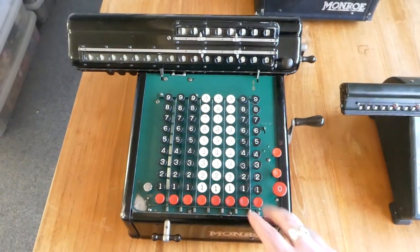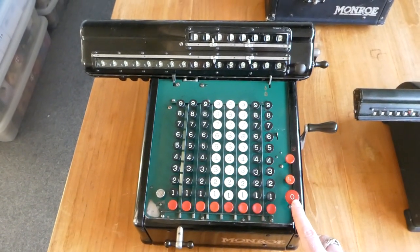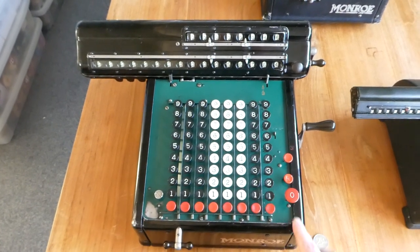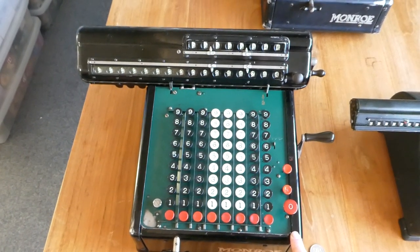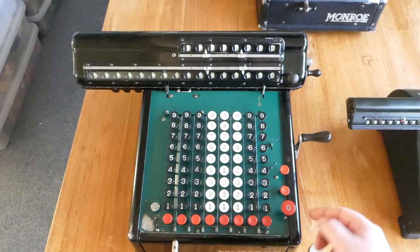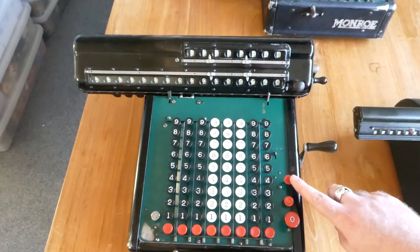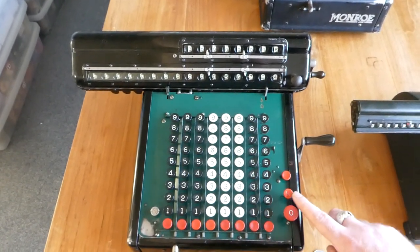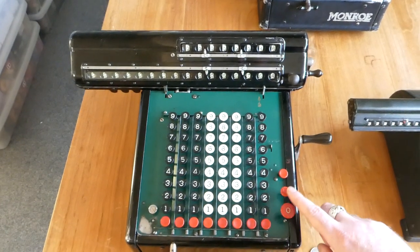When you're finished you can clear the keyboard with this large zero button here. To switch on the automatic clearing of the keyboard you press this button. This is a radio button as it were.